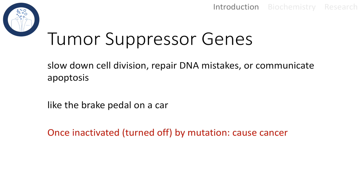Now we can talk about tumor suppressor genes. The normal function of the cell is to slow down cell division, to repair DNA mistakes, or to communicate apoptosis if necessary. So basically, tumor suppressor genes act like the brake pedal on a car. But once inactivated, they can't execute their function anymore, and this loss-of-function mutation causes cancer.